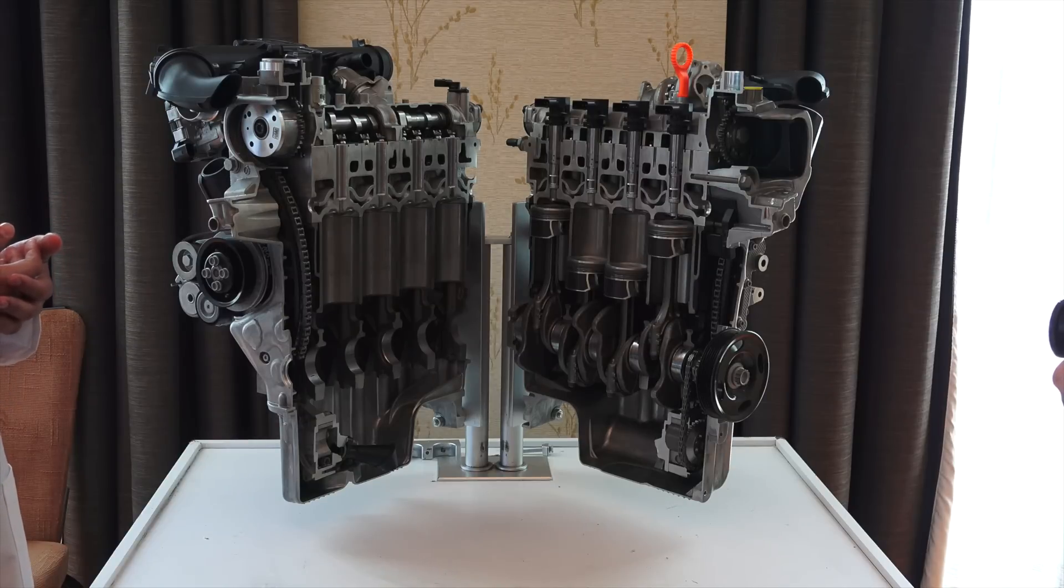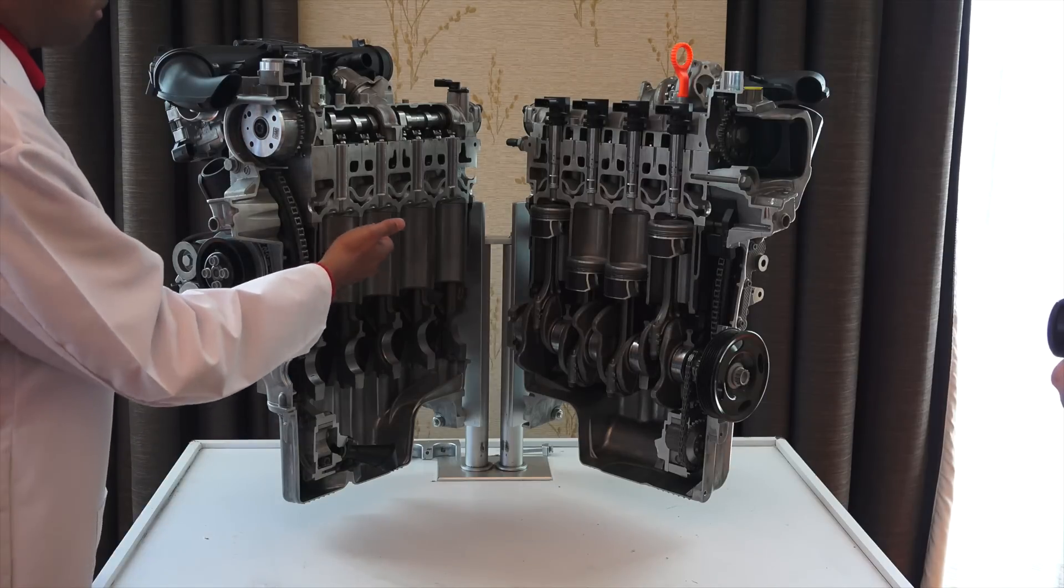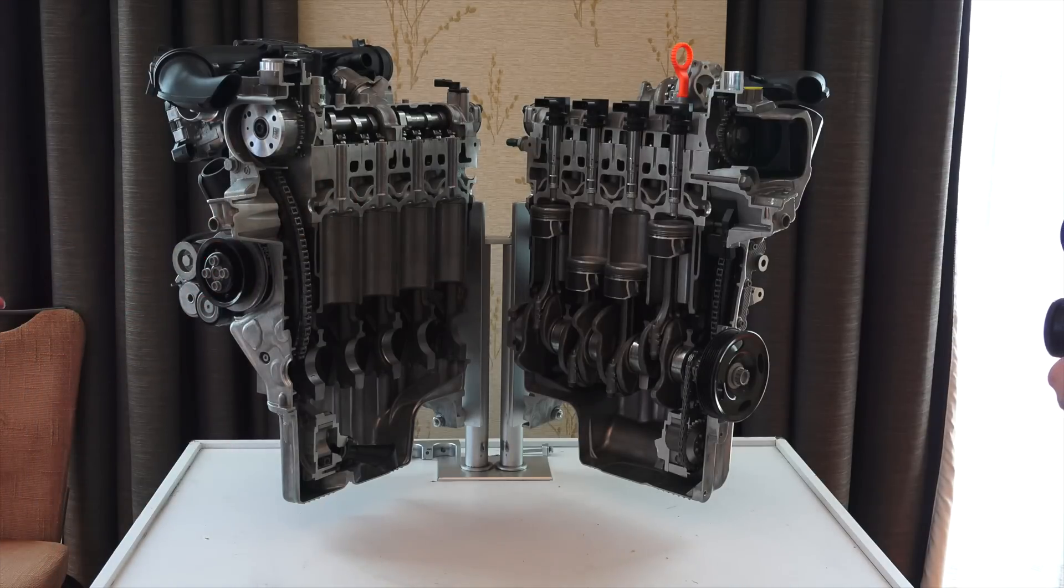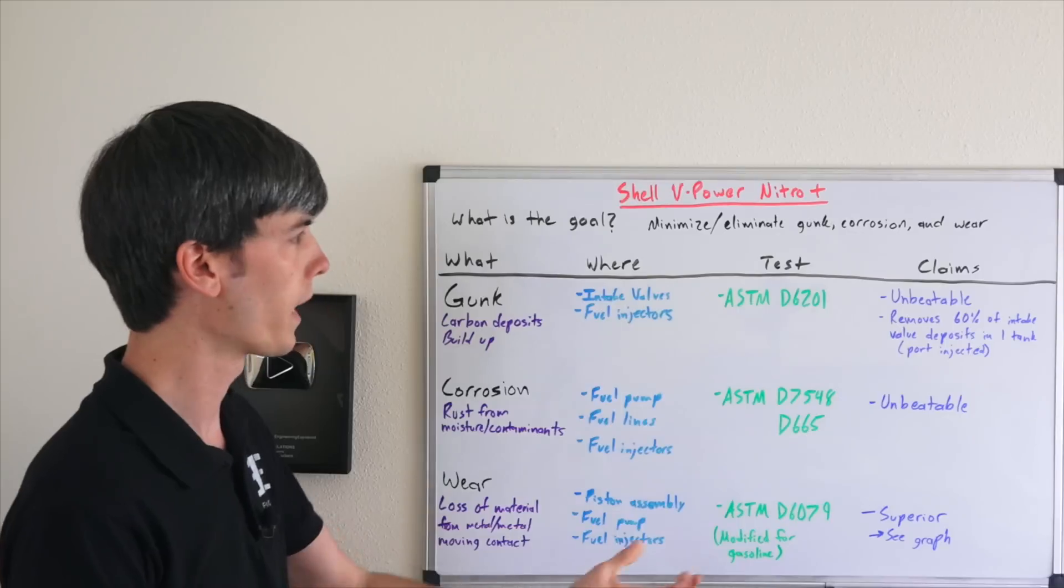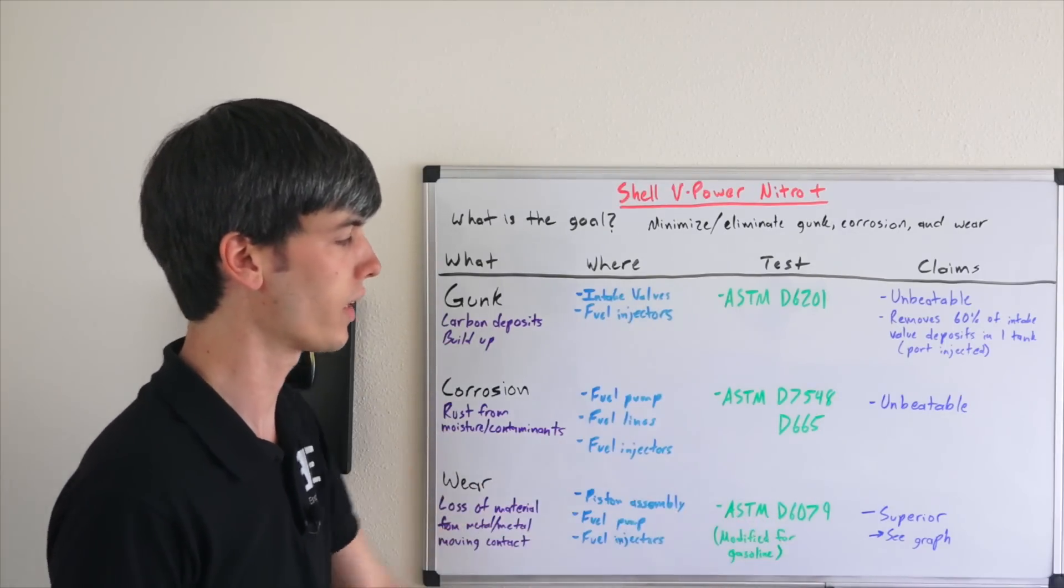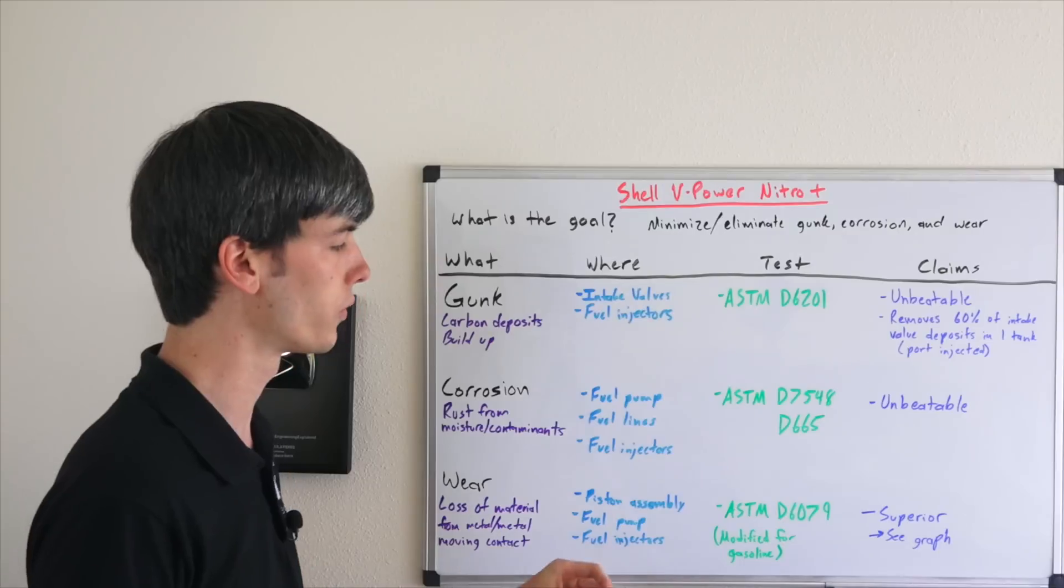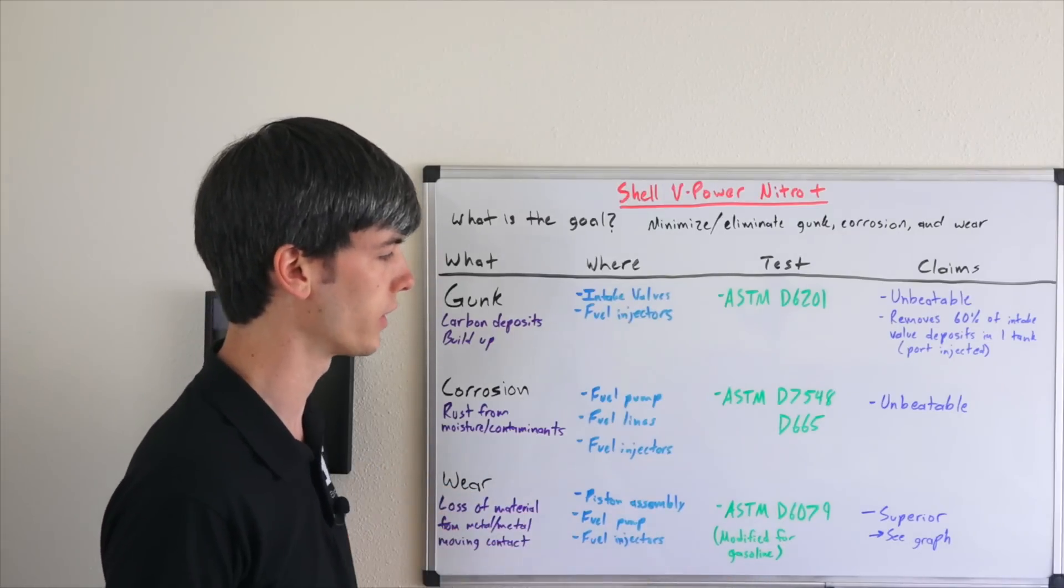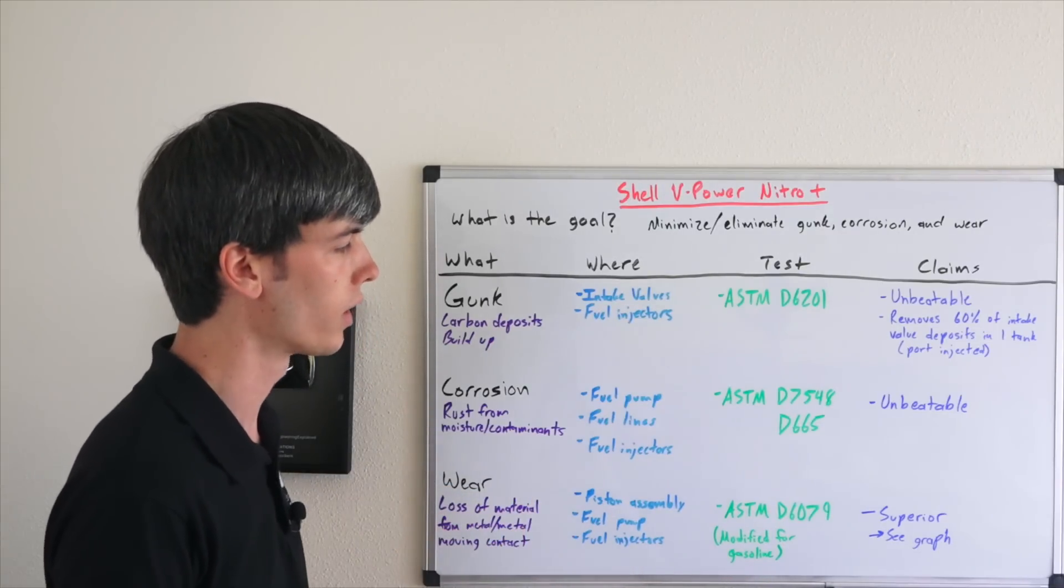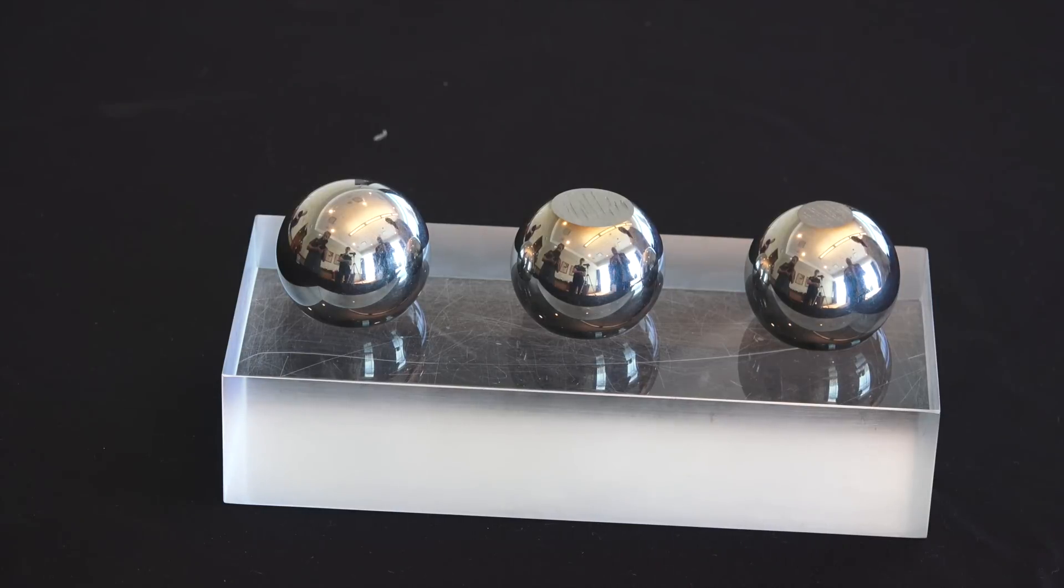So finally, moving on to wear, and this is the loss of material from metal-on-metal moving contact. This can occur in the piston assembly, in the fuel pump, and in the fuel injectors. The test that Shell uses to test for this is ASTM D6079. This is actually a test for diesel fuels, but they've just modified it for gasoline for their testing. So we can go ahead and check out their representation of this test.